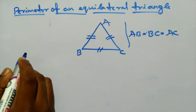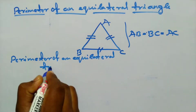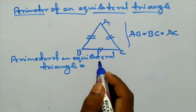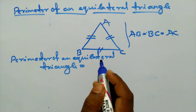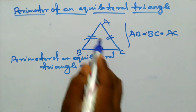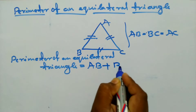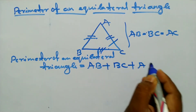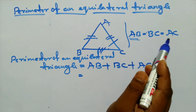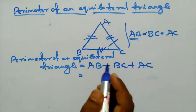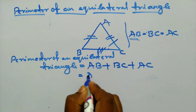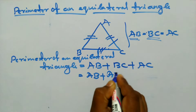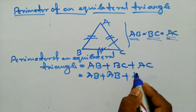The perimeter of an equilateral triangle is equal to the sum of the lengths of its three sides: AB plus BC plus AC. Now remember that in an equilateral triangle all sides are equal, so AB plus BC plus AC — we can write BC as equal to AB and AC as equal to AB.